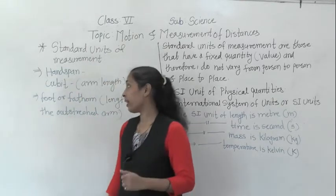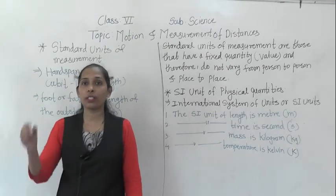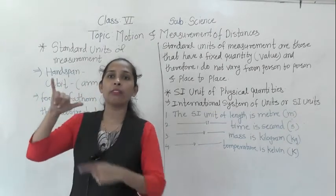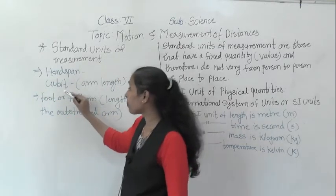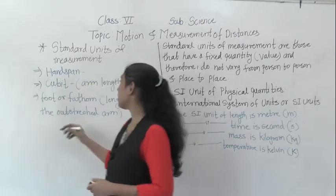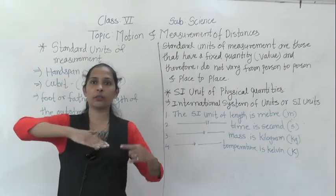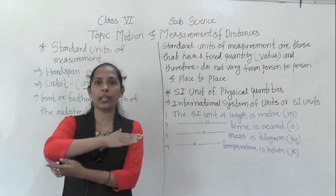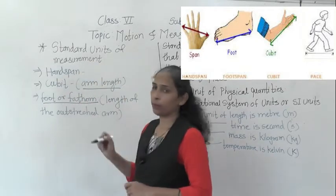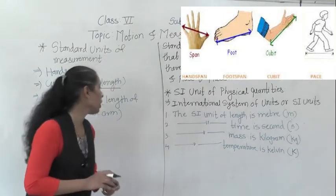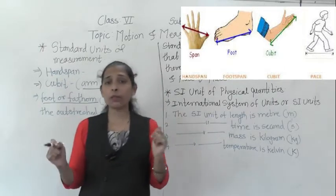They used different body parts. For example, they used their hand span — hand span means the distance from the stretched thumb to the little finger. Next, they used the cubit, which is the distance of the arm length from the elbow to the fingers. They also used foot, or padham, which means the length of the outstretched arm.